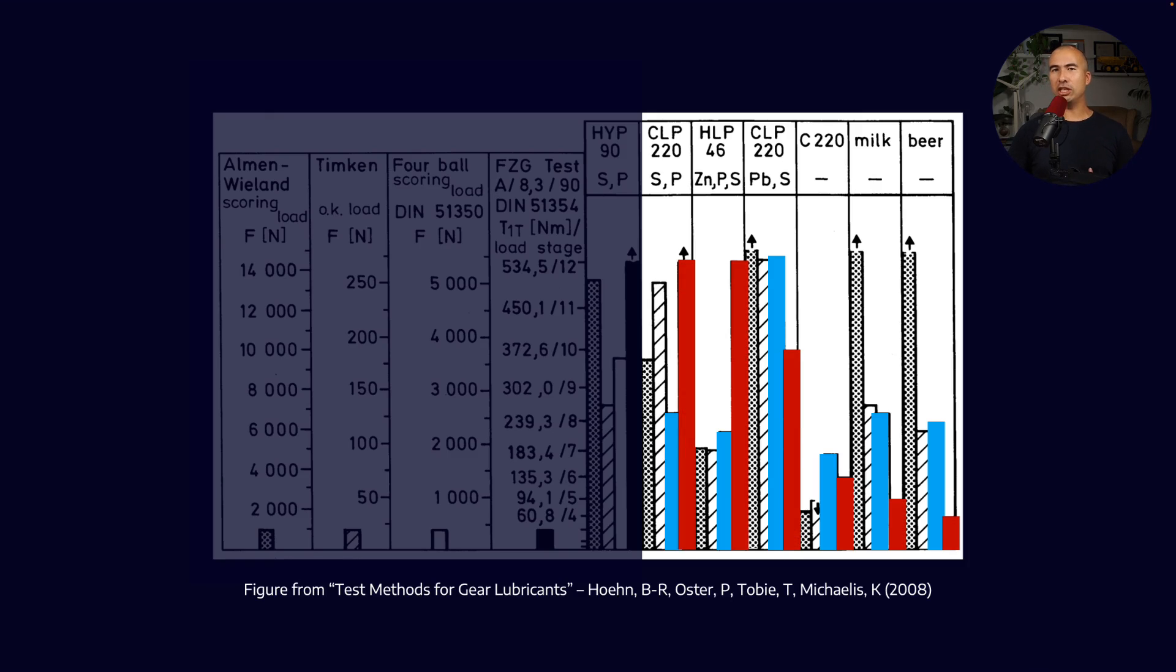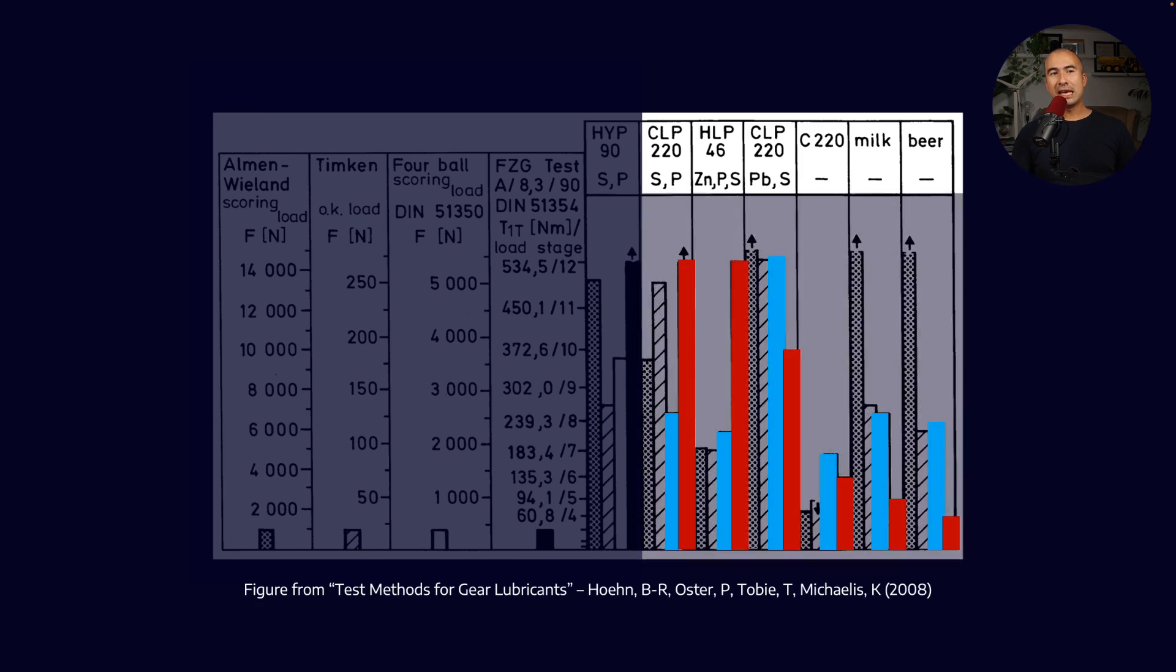The CLP 220 did not do all that well. And the hydraulic oil also not so good. The CLP 220 that contained the lead did very well. The base oil not so well. And then the milk and the beer had mid-level performance. And the thing which is stark about this is when you look at the performance range, what you can see is that milk and beer in the four ball test are performing as well, if not better, than the fully formulated lubricants.